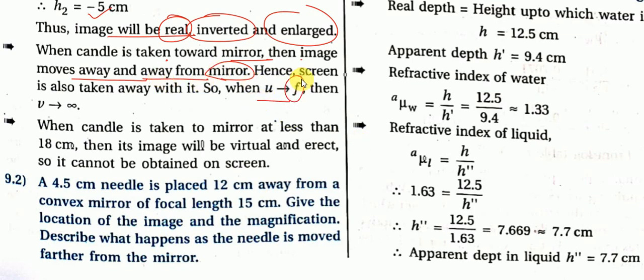When u tends to f, meaning the object is exactly at the focal point, then v tends to infinity. When the candle is taken closer than 18 cm — less than the focal length — the object is between f and p. The image then forms behind the mirror and is virtual and erect.